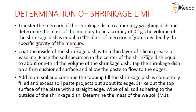Do not fill the dish fully — only one-third should be filled. Tap the shrinkage dish on a firm surface and allow the paste to flow to the edges. Add more soil and continue tapping until the dish is completely filled and excess soil paste projects above the edges. Then strike off the top surface with a straight edge and wipe off any soil adhering to the outside of the shrinkage dish.